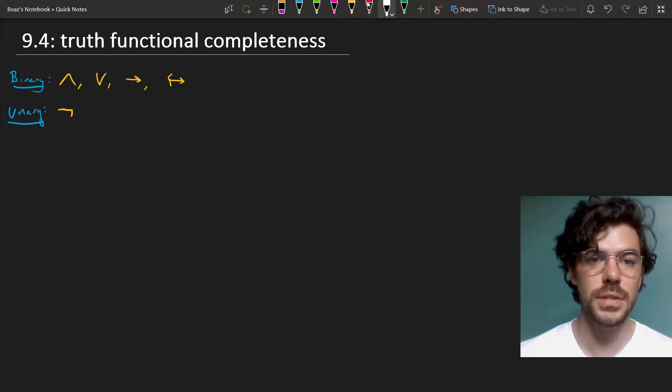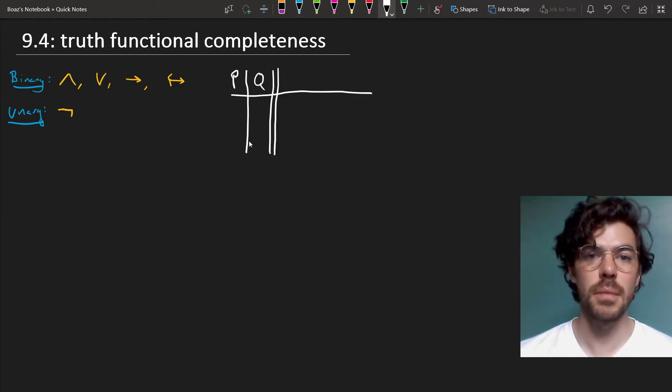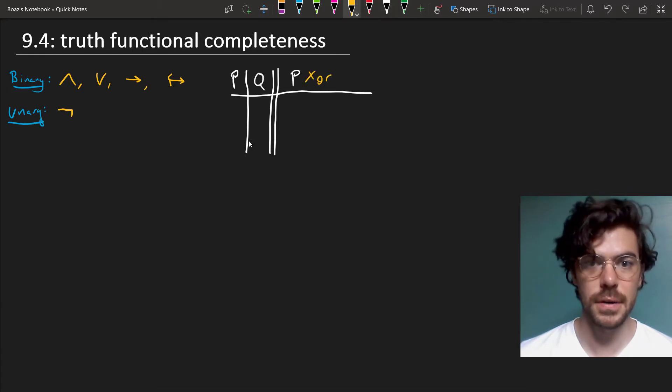So for instance, in an earlier video, we saw that we can construct a truth table for P or Q but not both. We might write this as P xor Q, and this will have the following truth table.